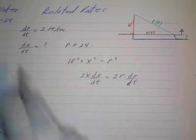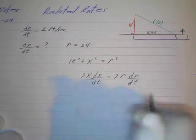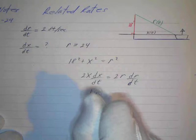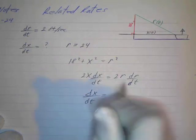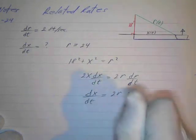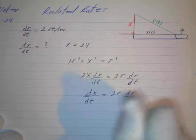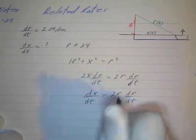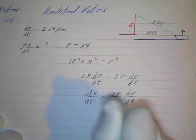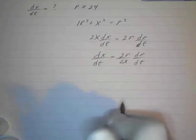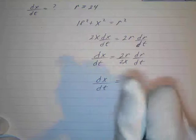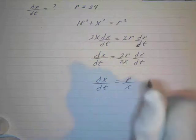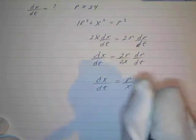And we're going to be looking for dx/dt, so we'll just divide both sides by 2x. So we've got dx/dt = 2r/2x dr/dt, which that's a 2, divided by 2x. So again, dx/dt = r/x dr/dt.